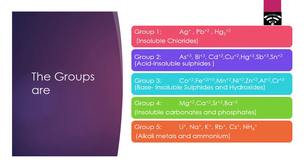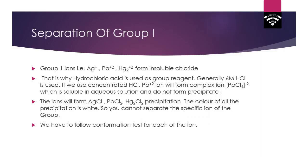Group 4 contains magnesium, calcium, strontium, and barium plus two, and they form mostly insoluble carbonates and phosphates. Group 5 contains mostly alkali metals and ammonium. So let's start the separation of the Group 1.